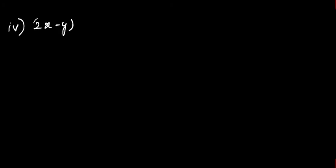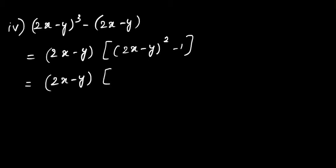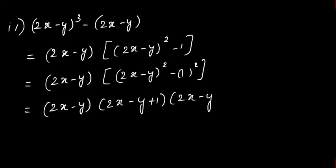Fourth question: (2x - y)³ - (2x - y). Take (2x - y) as common, so we get (2x - y)[(2x - y)² - 1]. Now (2x - y)² - 1² is of the form a² - b². Expanding using the formula, we get (2x - y)(2x - y + 1)(2x - y - 1).